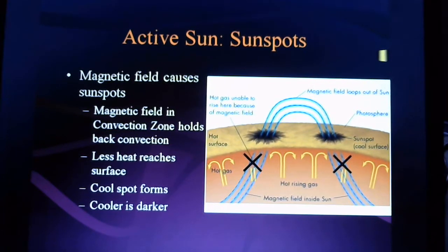Sunspots are in the category of the active sun because we have figured out that they come and go because the magnetic fields on the surface of the Sun are always changing. So magnetic fields are actually the cause of sunspots. How does that work? Well, let's go to this picture.